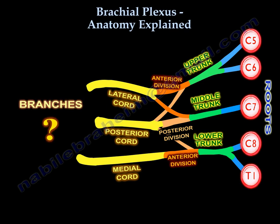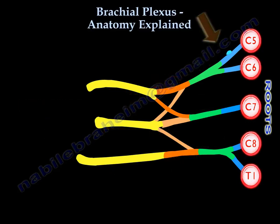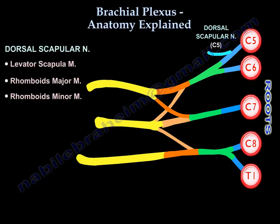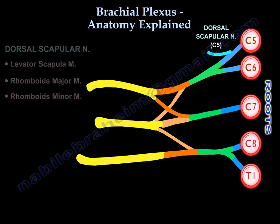Let's start with branches from the roots and the upper trunk. These are important because they are preclavicular branches — if they are injured, it can give a bad prognosis. From C5 comes the dorsal scapular nerve, which supplies the levator scapulae, rhomboid major, and rhomboid minor.